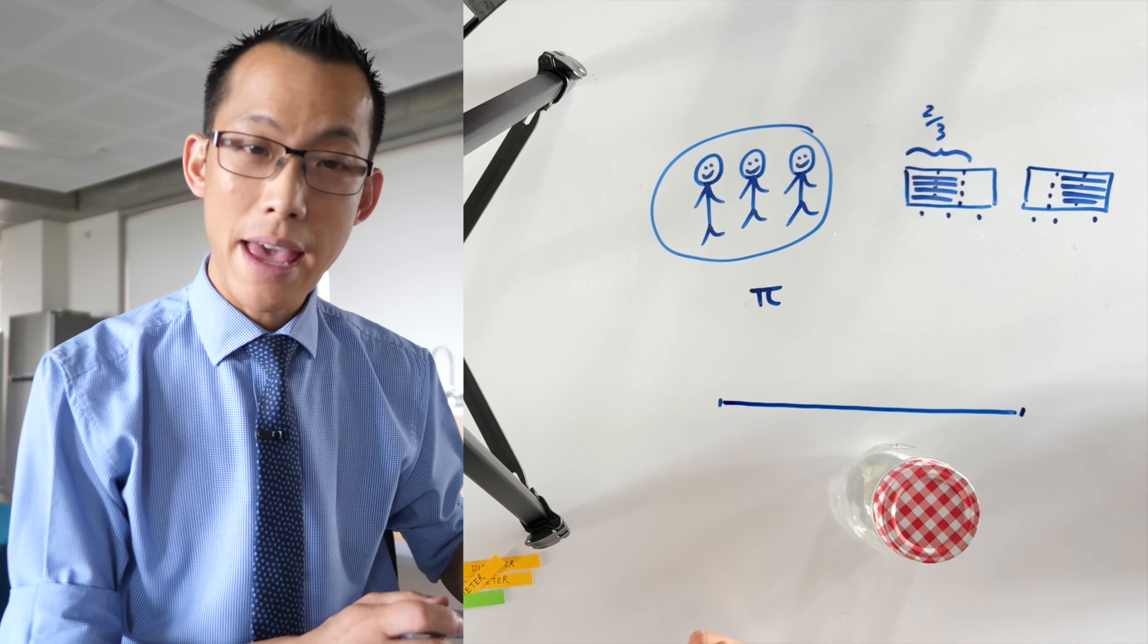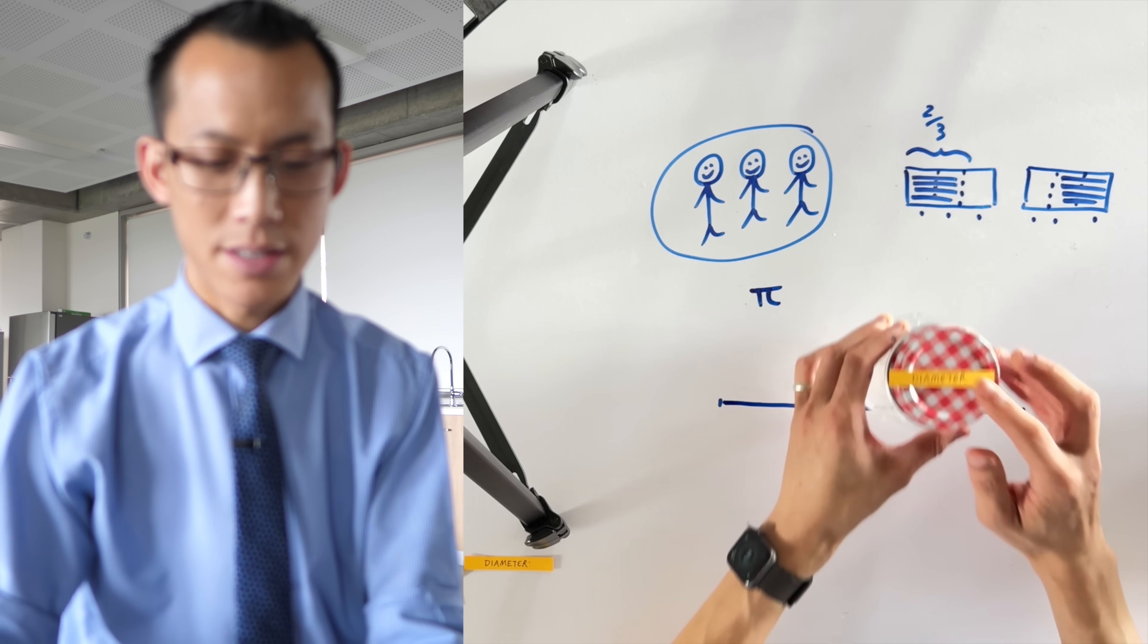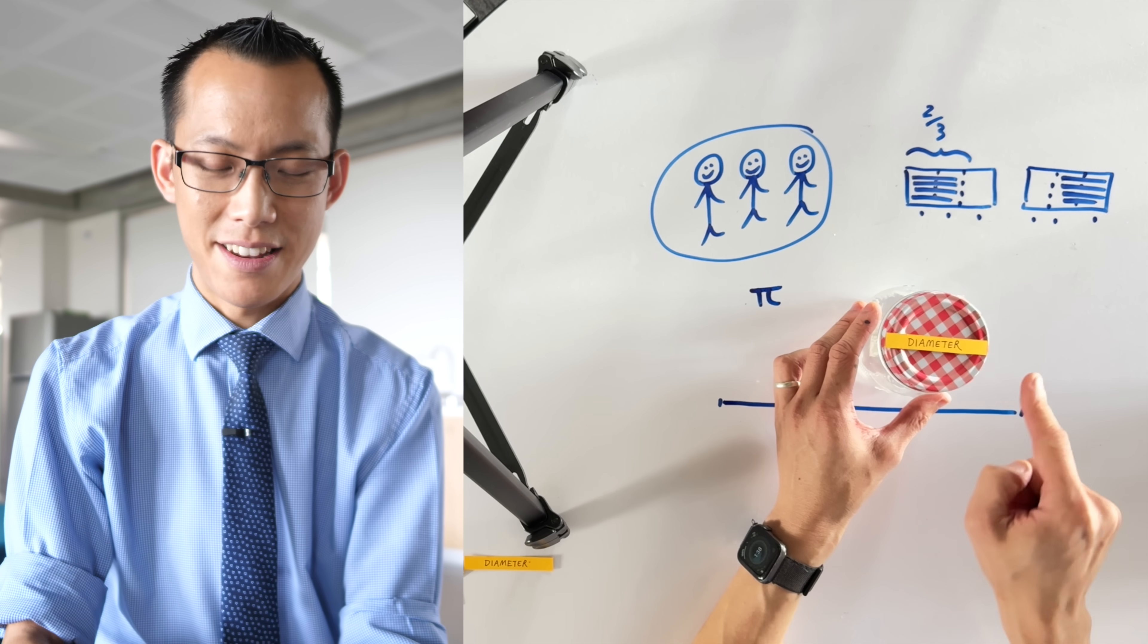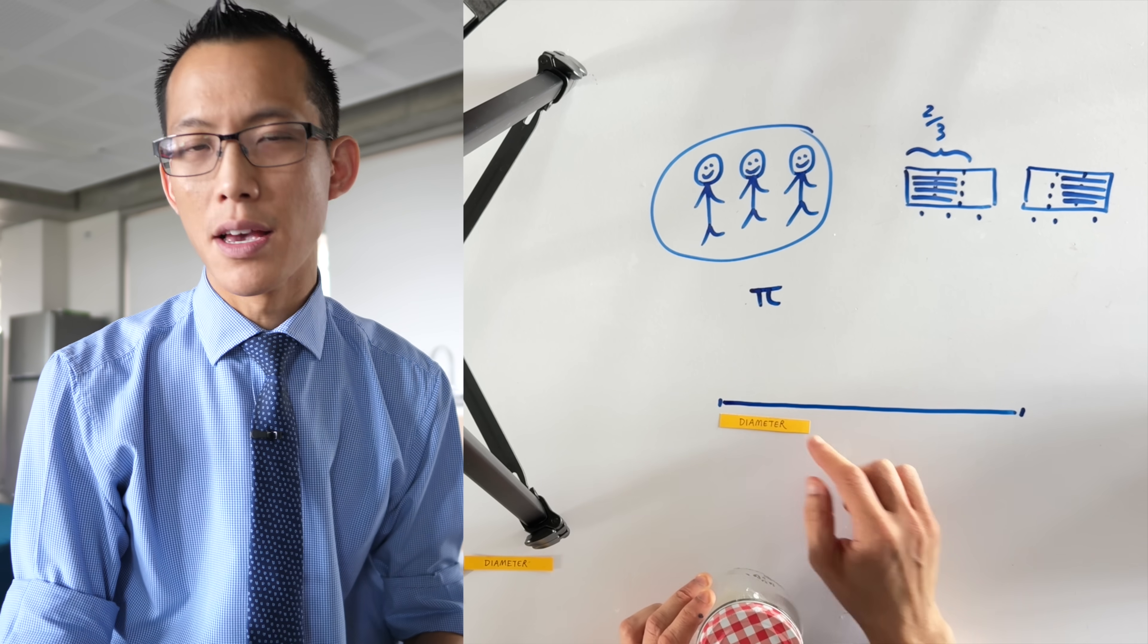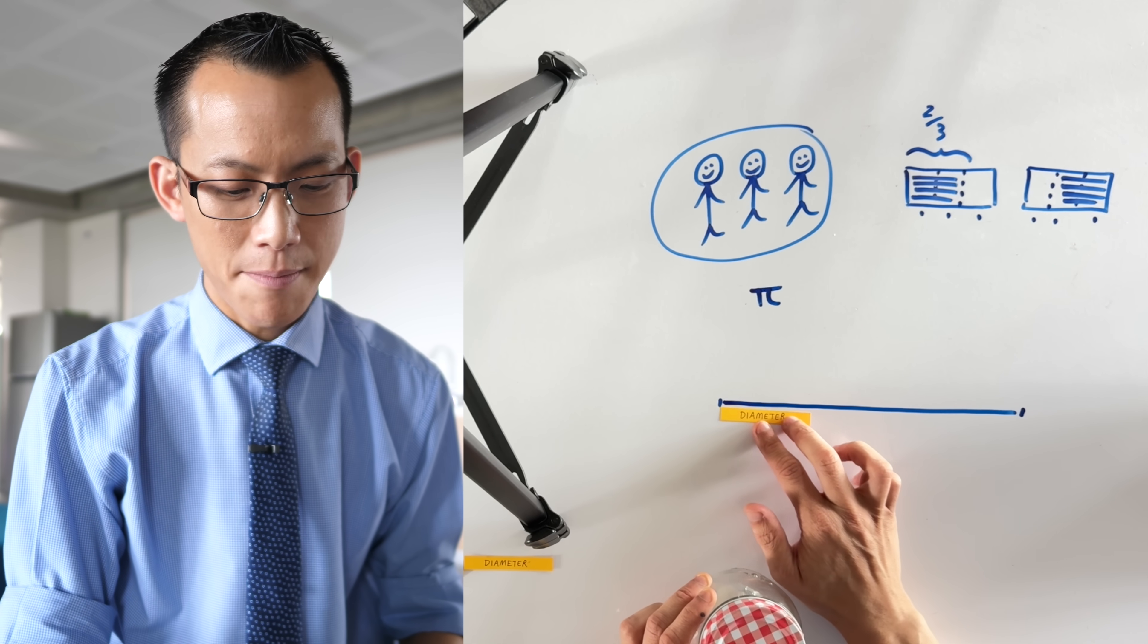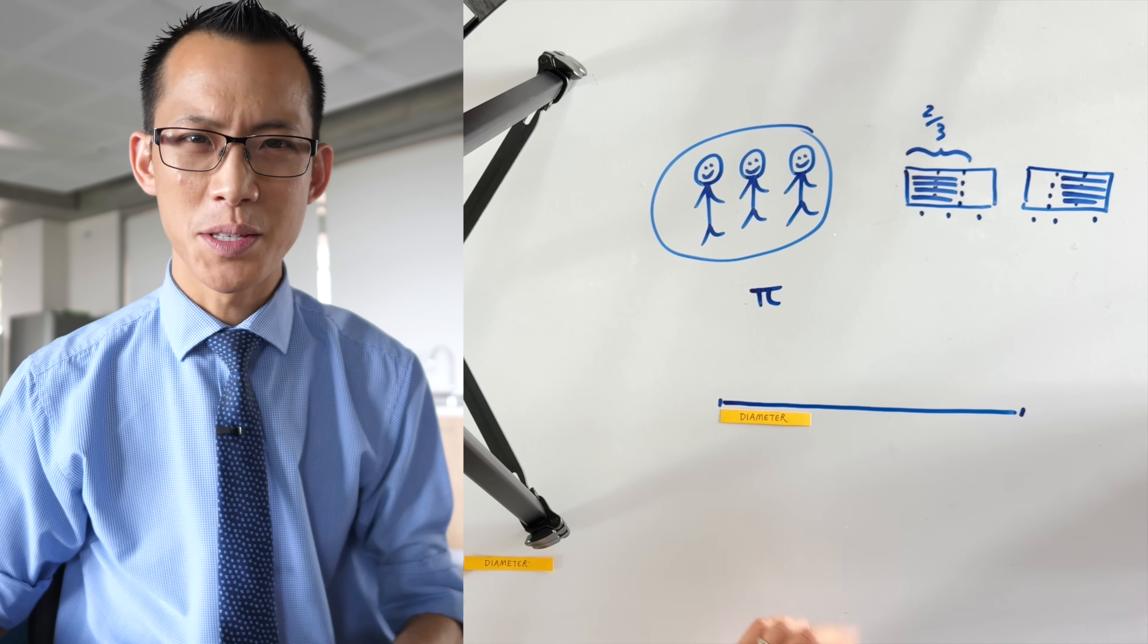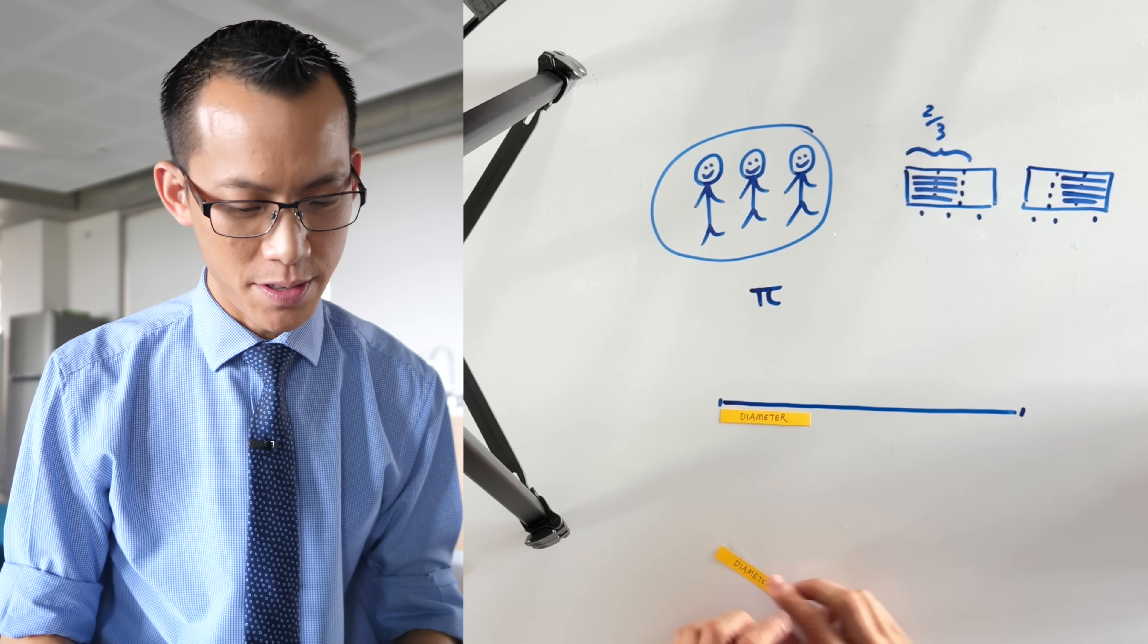Now if I were to compare the circumference of the jar to its diameter, you can see I've actually pre-measured this one, that's that distance from one side to the opposite side. You can see that obviously the circumference is much longer than the diameter, but the question I'm interested in and that mathematicians down the ages have wondered is how much longer, what number of diameters would fit into the circumference?